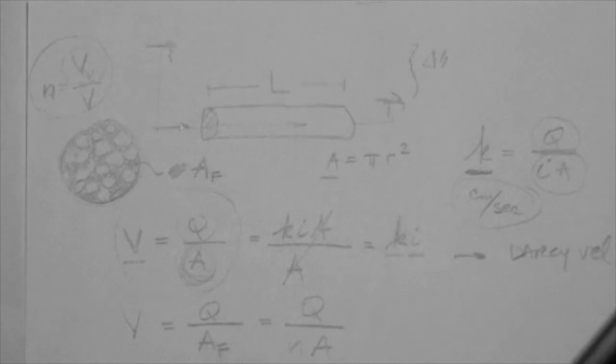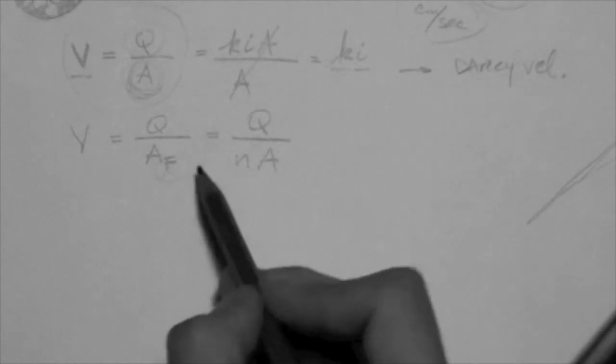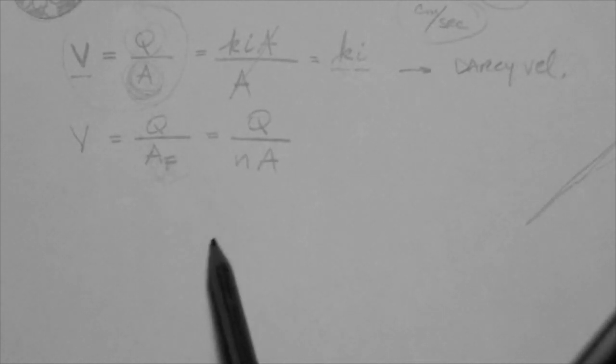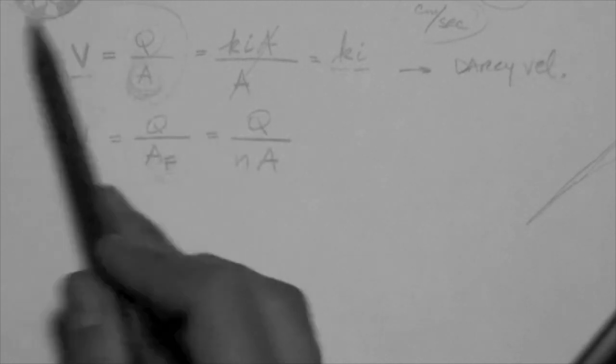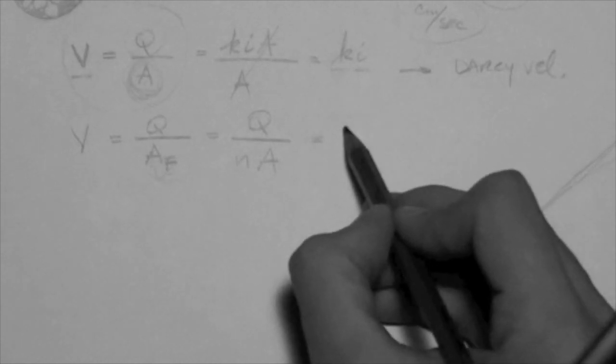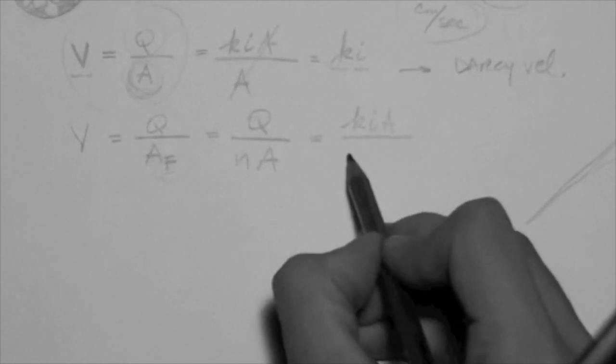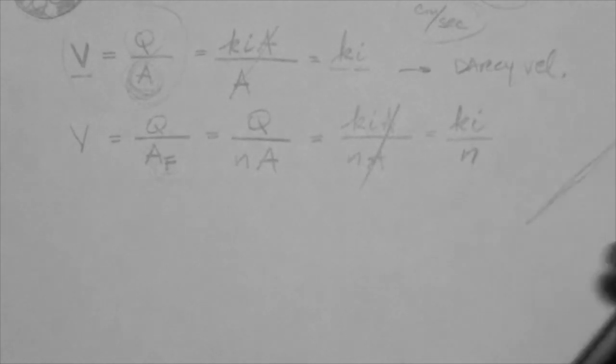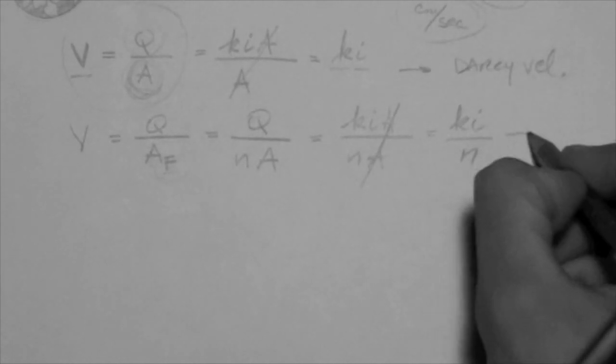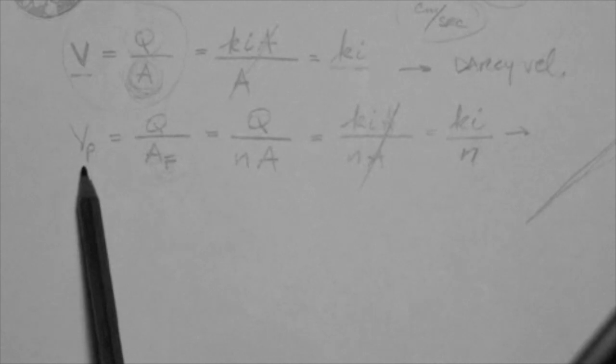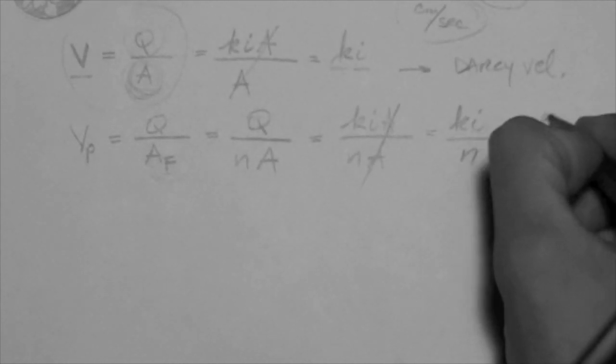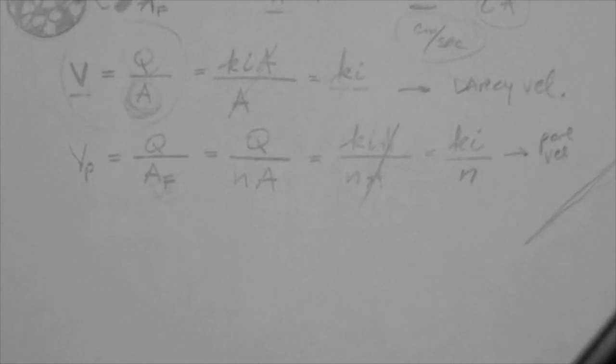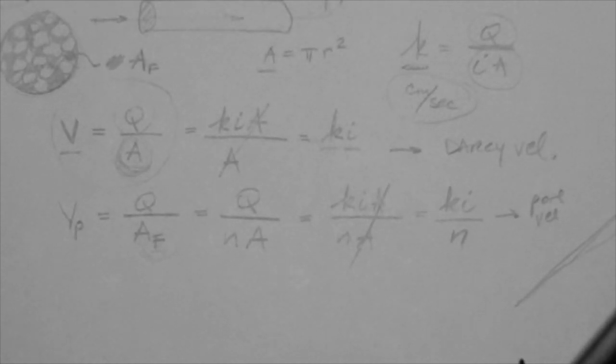So Q is Q. That's just the measured value. That doesn't change. And then we have AF is equal to N times A. A is the total area, pi R squared. So what we get is KIA over NA. This cancels, KI divided by N. This velocity is the pore velocity. We call this one the pore velocity. You see that? Yes. The pore velocity.